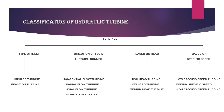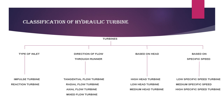Turbines are classified based on: the type of inlet, the direction of flow through the runner, the head, and the specific speed. Based on head, turbines can be high head, medium head, or low head. Based on direction of flow through the runner, we have tangential flow, radial flow, axial flow, and mixed flow.